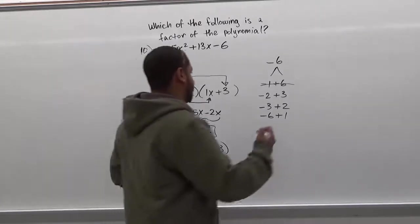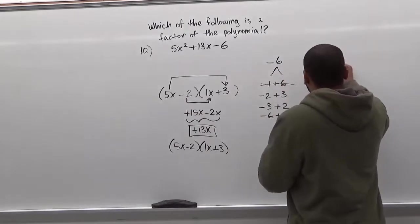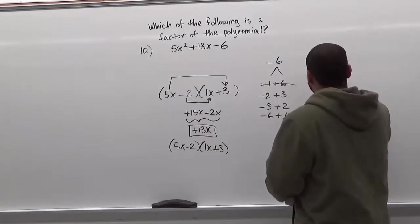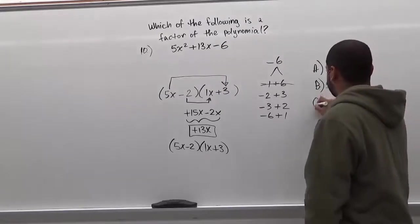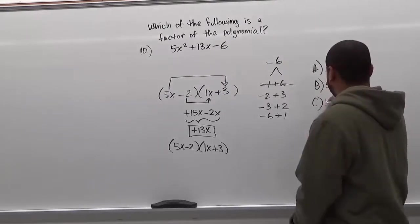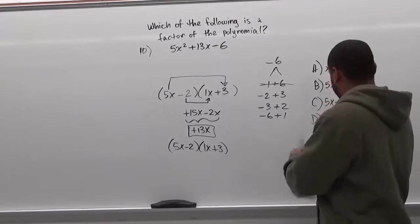Our answers are as follows. Option A is x minus 3. Option B is 5x plus 2. Option C is 5x minus 3. Option D shows x plus 3.